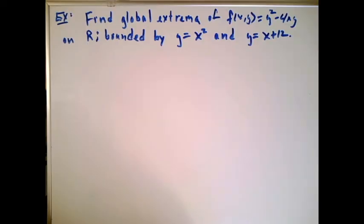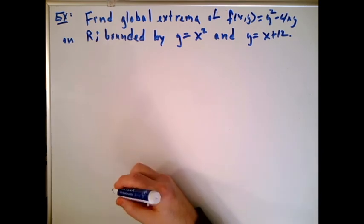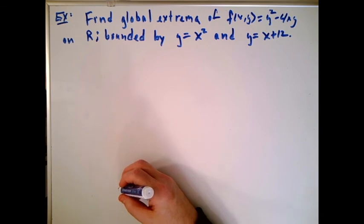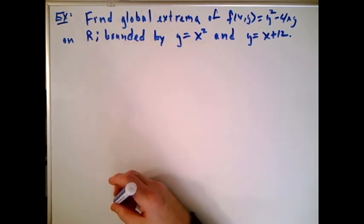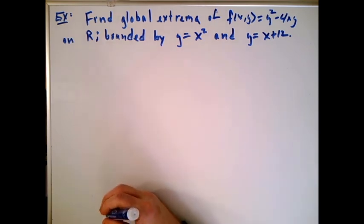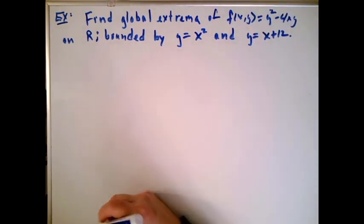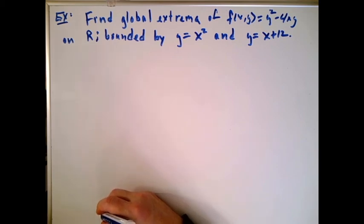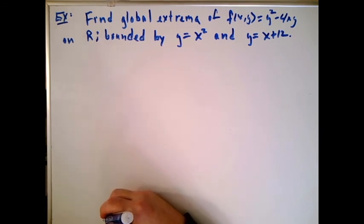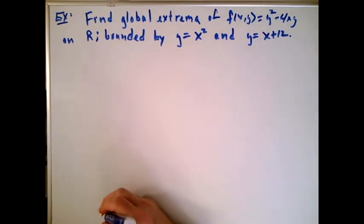Here's the problem: find the global extrema of f(x,y) = y² - 4xy on the region R bounded by the parabola y = x² on one side and y = x + 12 on the other. Note that I have to have that region, because this function has no global maximums otherwise — plugging in x = 0 gives y², which goes up forever, and plugging in y = 1 gives 1 - 4x, a line that goes down forever. The region restricts what we're looking at.